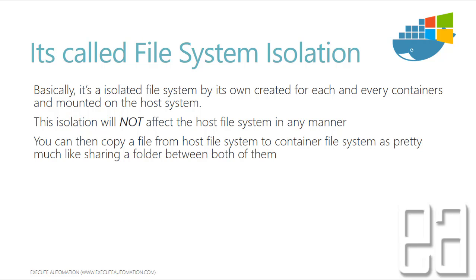You can copy a file from the host file system to the container file system, pretty much like sharing a folder between both of them. This is really cool because if you want to copy a file from a Hyper-V virtual machine, it goes through a lot of process — sharing a folder from your host machine, having it appear in your virtual machine, and then copying files, which is kind of slow. But with file system isolation technology, it's just mapping the folder into the host kernel's file system and the container's file system, so copying is much faster.